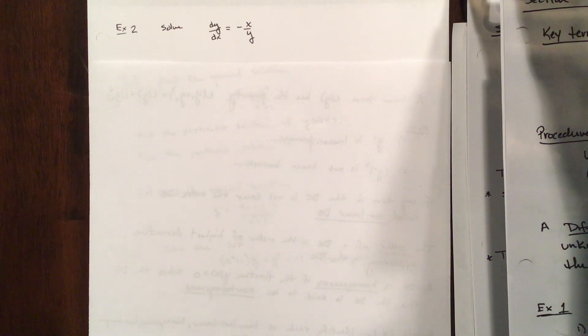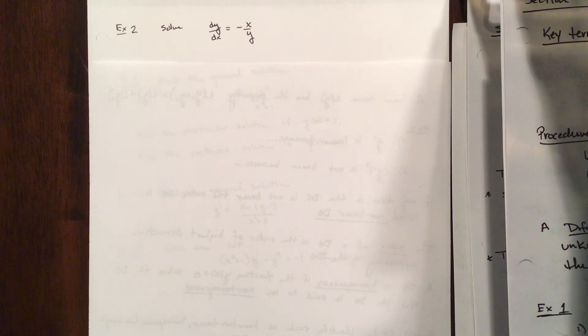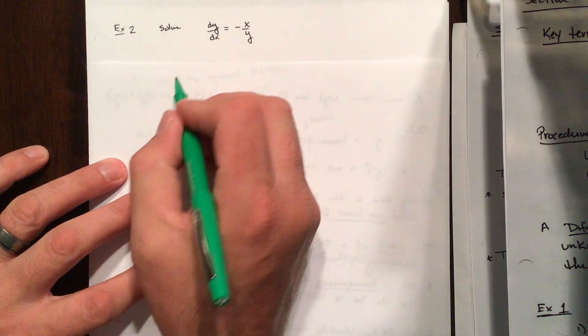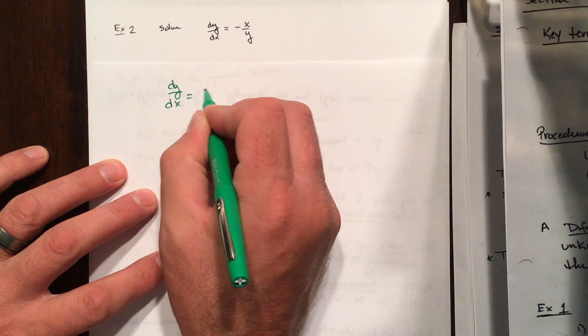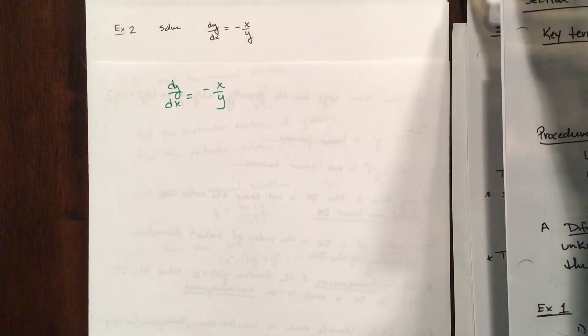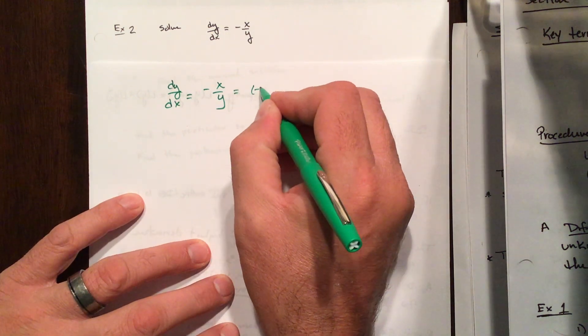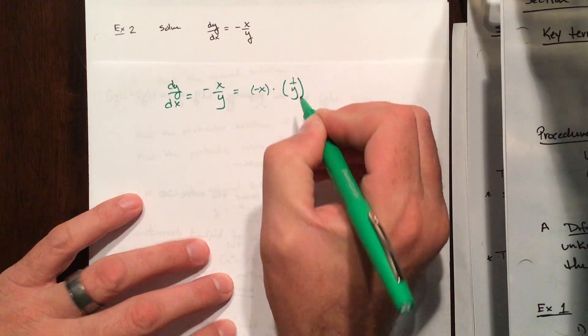Problem number one: dy/dx equals negative x over y. If you remember back to last lecture, we looked at a slope field for negative x over y. We're going to find a function that solves that differential equation — a general solution. Our two functions here are negative x times 1 over y. That was simple.